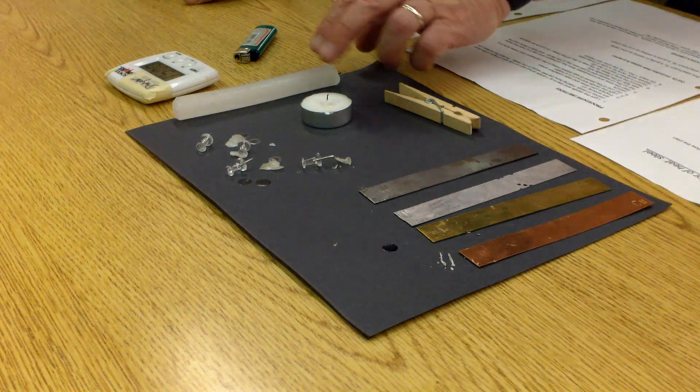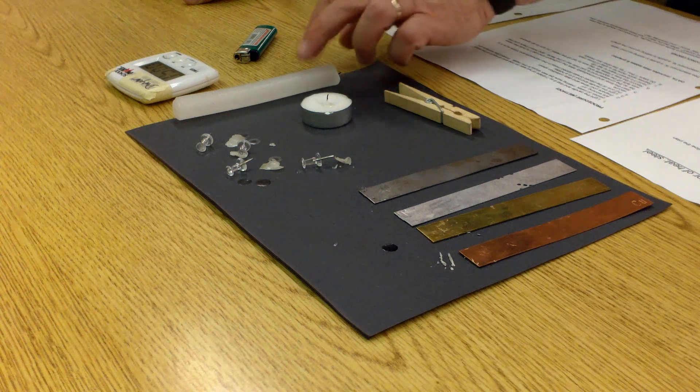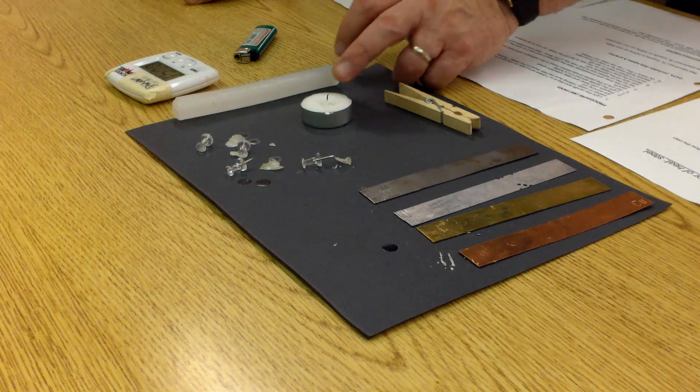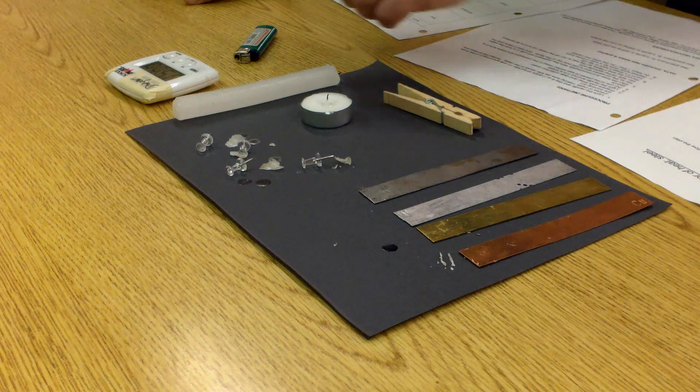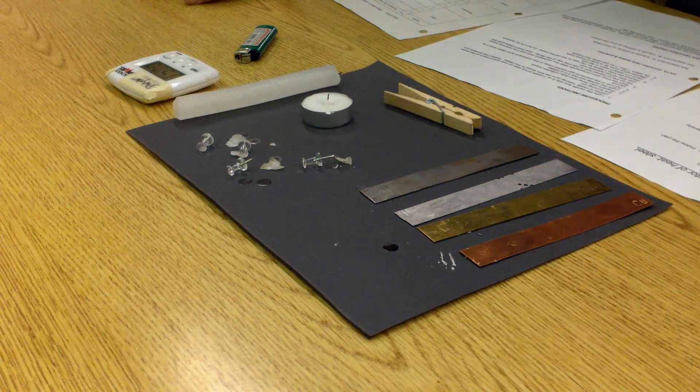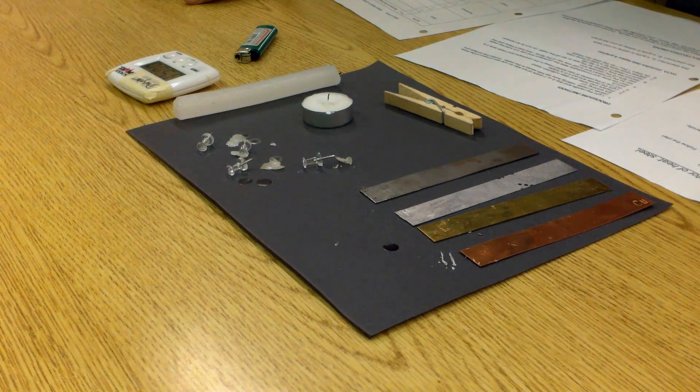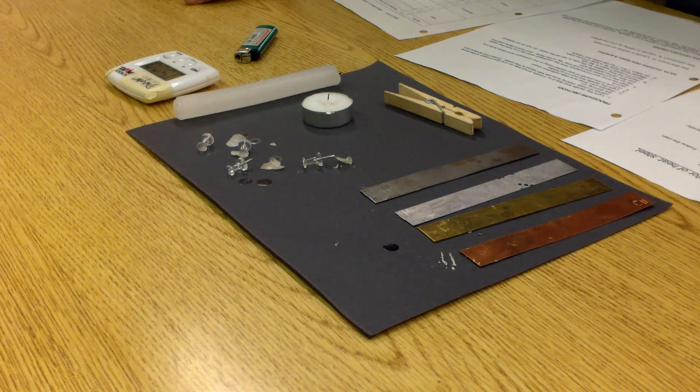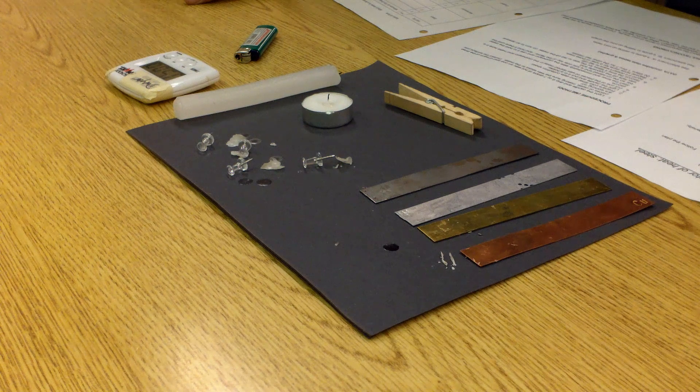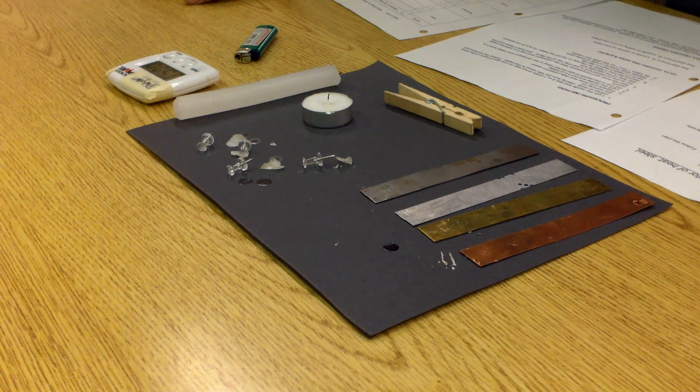So four pushpins, some wax for dripping, a little candle for heating, a clothespin to hold the bar, a timer because you've got to know how long it takes for the pushpin to fall off, a lighter, and your paperwork, including table of data and some graph paper to make your graph.